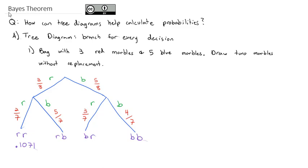Three-eighths times five-sevenths gives 0.2679 — the probability of red then blue. Going down the other direction, blue then red: five-eighths times three-sevenths is also 0.2679. And blue then blue: five-eighths times four-sevenths is 0.3571.